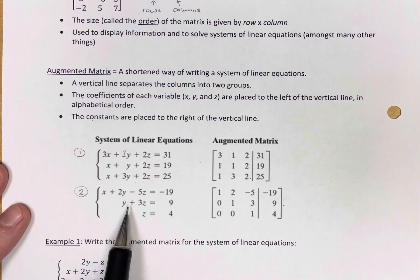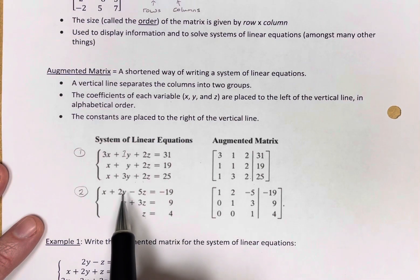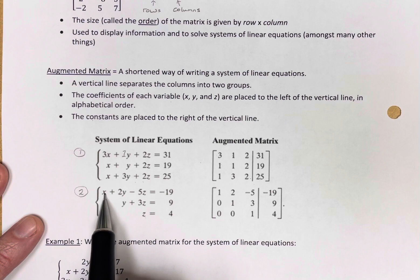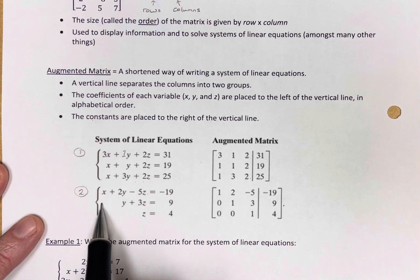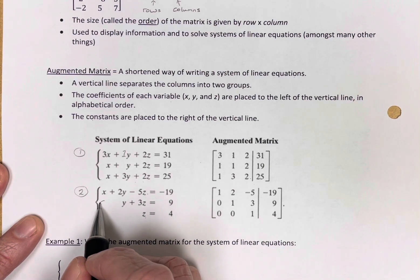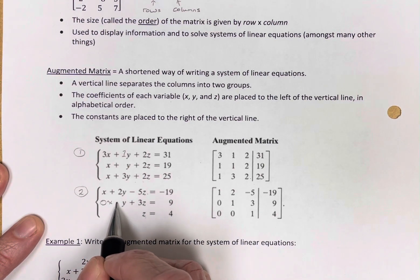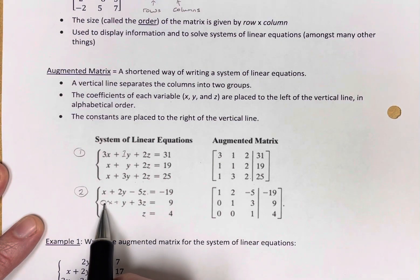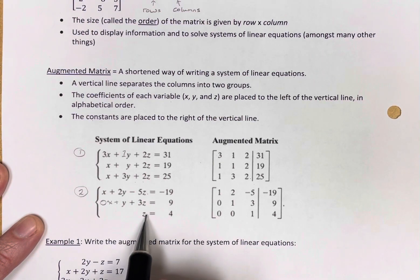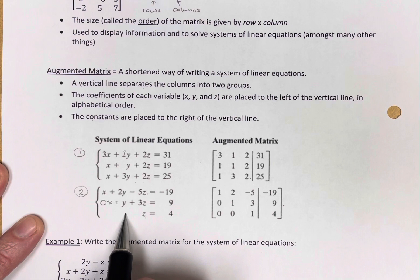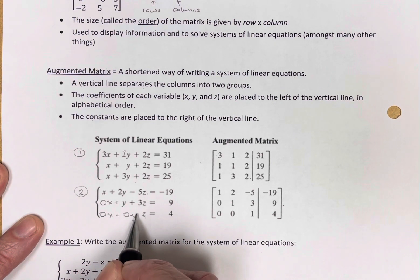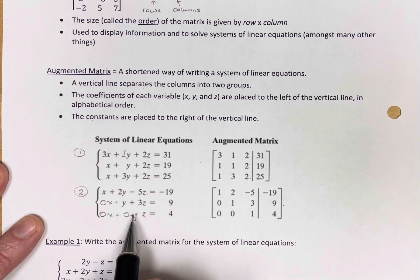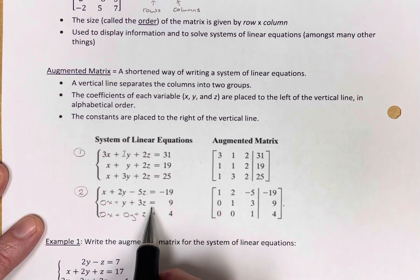Let's take a look at example number two. Notice the first equation has all three variables. The second equation is missing the x, but we know that means we could write a zero x, so we have a coefficient. And the third equation is missing both the x and the y term. That's because they're both being multiplied by zero.